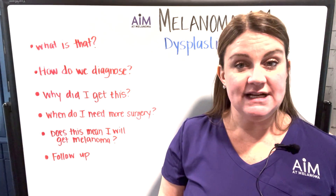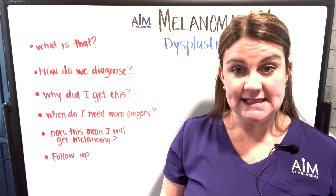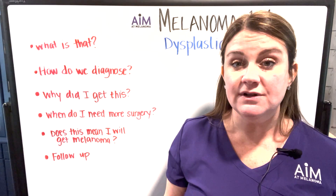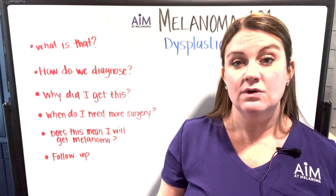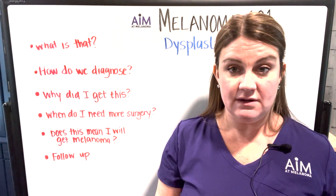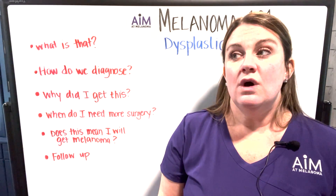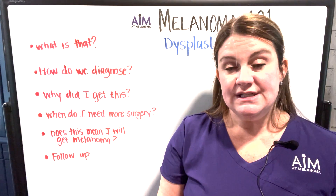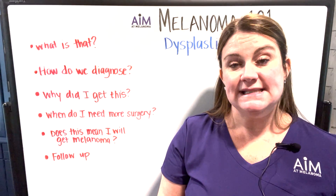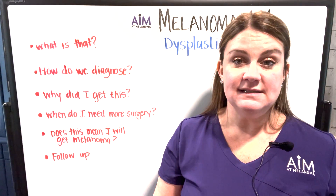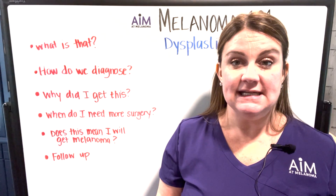Dysplastic nevi are generally categorized by the level of severity of the dysplasia or atypia. A lot of times you'll see terms on pathology reports that say mildly dysplastic, moderately dysplastic, or severely dysplastic.